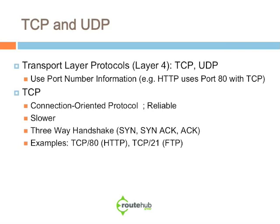One of the things you'll learn about in Networking 101 and about the OSI model is that on Layer 4, that is the transport layer. The transport layer protocols are TCP and UDP. Transport layer protocols use port number information. For example, HTTP uses port 80 with TCP.